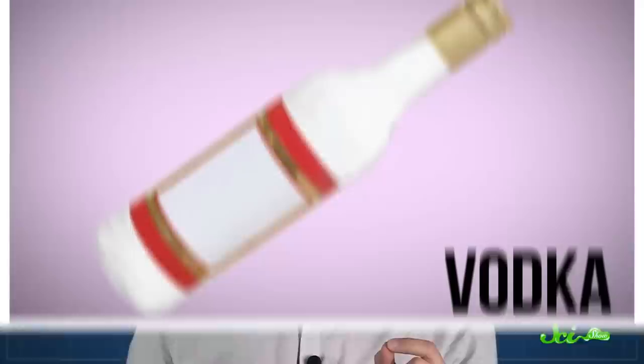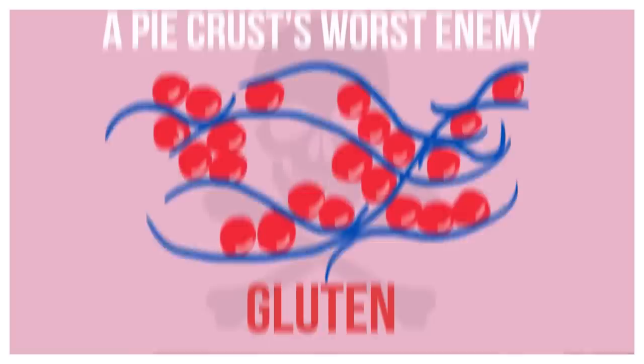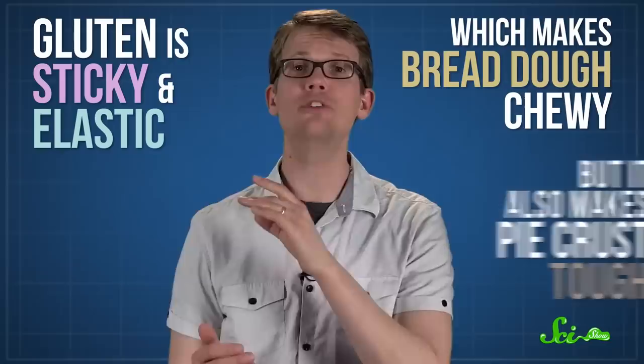Vodka. Normally, two of the main ingredients in pie crust are wheat flour and water. But wheat flour contains two proteins, gliadin and glutinin, that can combine to form a delicate pie crust's worst enemy, gluten. The proteins combine when they're exposed to water, and the more you work the dough, the more gluten will develop. Generally, more gluten is a good thing, if you're baking bread, that is. Gluten is sticky and elastic, it makes bread dough chewy.